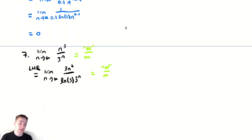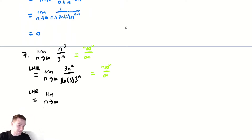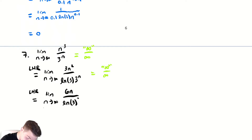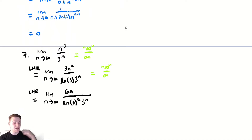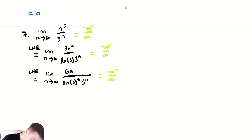Maybe we panic at that, but we be resilient and say: do it again. L'Hôpital's rule is the only thing we know how to do, so we repeat until something nice happens. The next derivative of 3n squared gives 6n, over ln of 3 squared times 3 to the n. We're making progress on the numerator - it's getting more manageable - while the denominator just accumulates ugly constants. We evaluate and again get infinity over infinity.